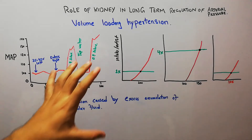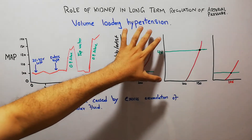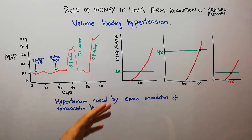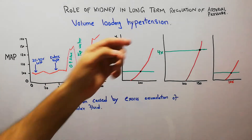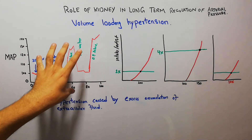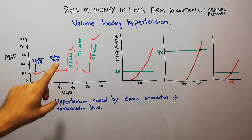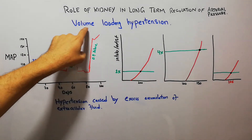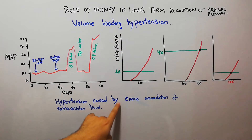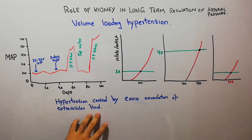In this lecture we are going to discuss volume loading hypertension. Initially we are going to define what volume loading hypertension basically is, and then we are going to explain it with an experiment and a few graphs. Volume loading hypertension is hypertension caused by the excess accumulation of extracellular fluid.